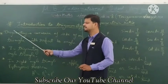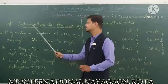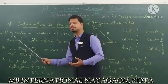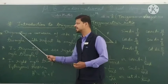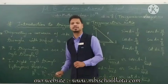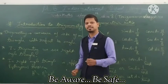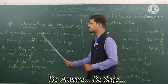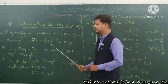First of all, I will explain some concepts related to Trigonometry. First, the introduction: what is the meaning of Trigonometry? 'Trigon' means triangle and 'Metri' means measurement. So Trigonometry is the measurement of the sides of a triangle with respect to its angle.